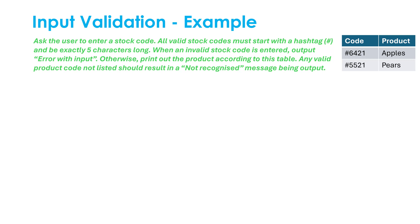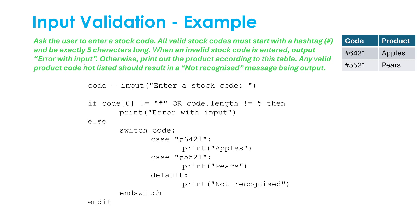Here is an example question for you to pause and try. In this question, we are validating a stock code — it's invalid if it doesn't start with a hashtag and isn't five characters long. This question doesn't say anything about repeating the input if it's invalid. It just says if it's invalid, output 'error with input'. So here's an example of where we actually need an if statement rather than a while loop.